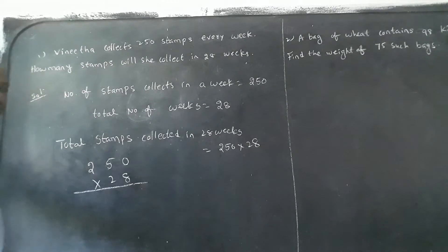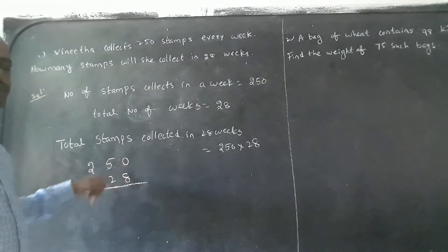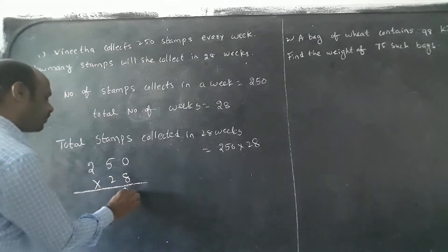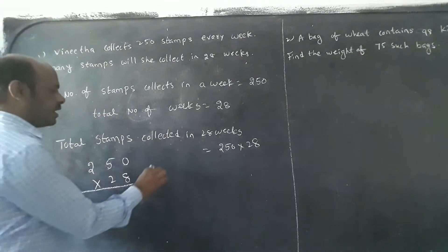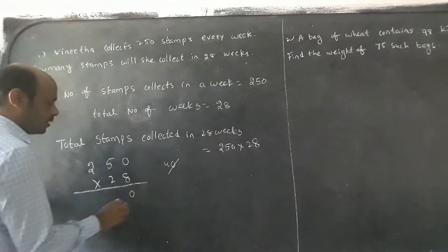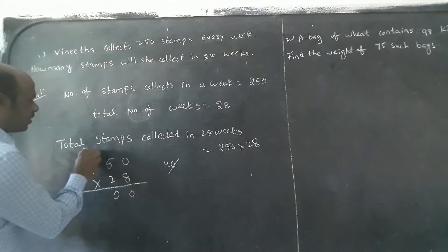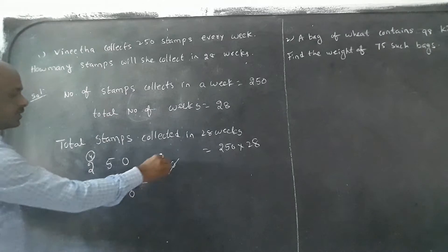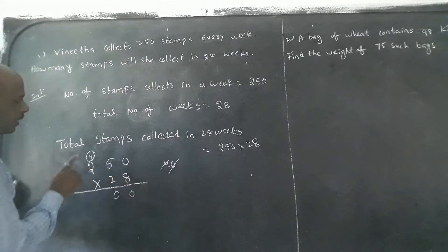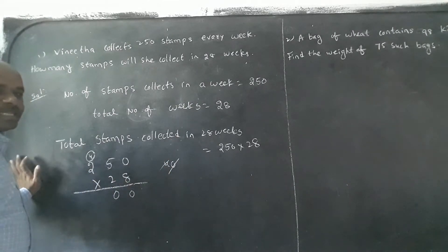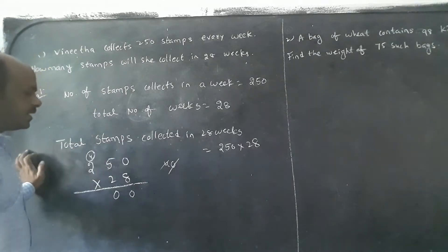We have to use the 8 table and the 2 table. Eight into zero is zero. Eight fives is 40 — that is a two digit number, so write zero here and carry four. Eight twos is sixteen, plus carry four is twenty.